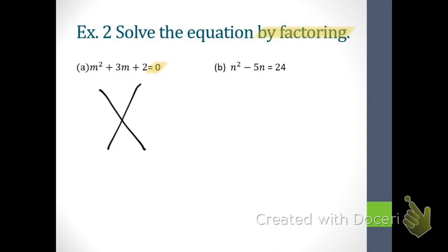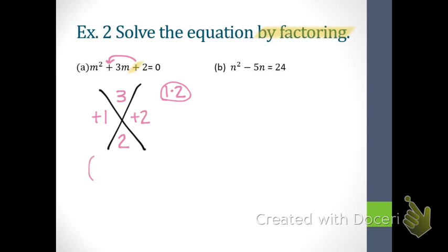For letter A, what has been set equal to 0? A trinomial with a leading coefficient of 1. So the factoring we do is not GCF related — this is the factoring we've been working on today, drawing your X. First, look at the second sign — it's positive, so our signs will be the same. Look back at the first sign — they'll both be positive. Fill those in. What goes at the top of the X? The coefficient of m, which is 3. At the bottom? 2. Factors of 2 are 1 and 2.